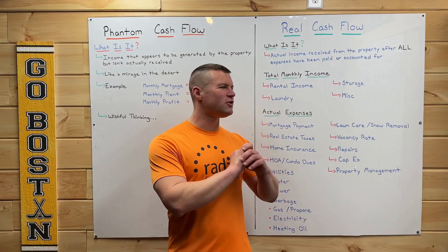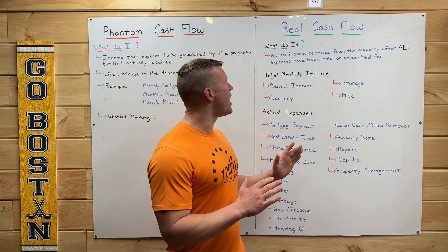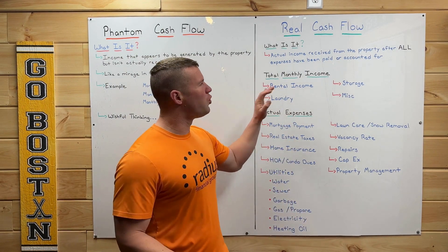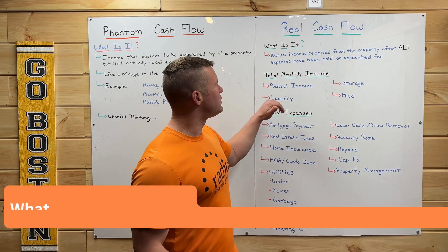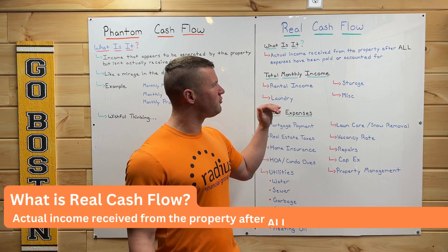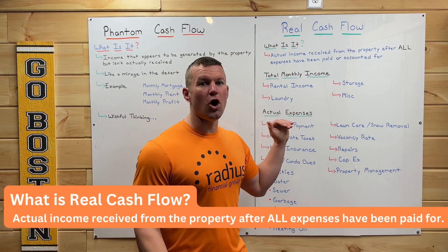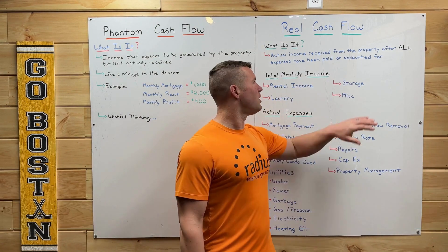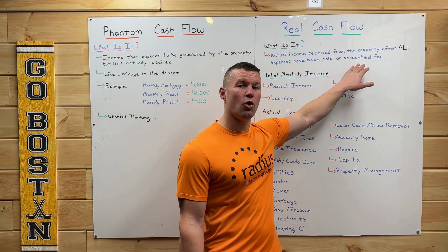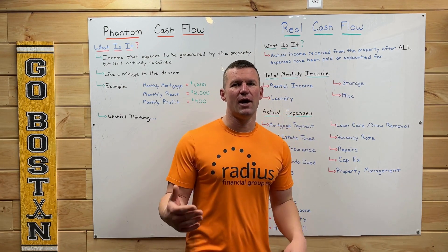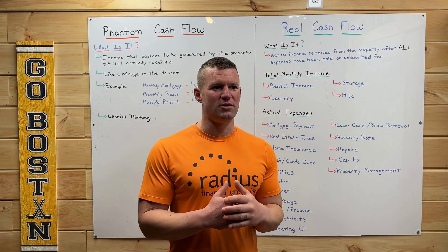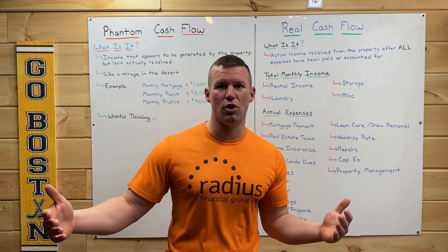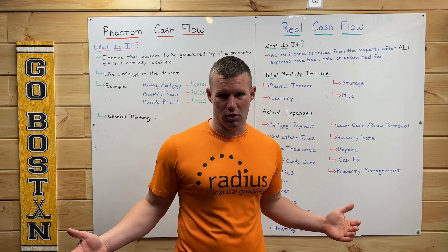Now let's go on to the adult side of the whiteboard and talk about real cash flow. What is real cash flow? It's actual income received from the property after all expenses have been paid or accounted for. That last part is big — 'or accounted for' — meaning you're taking into account expenses that will happen this month as well as two or three months down the road, even two or three years down the road.